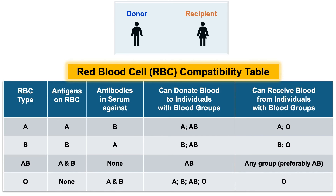The table provides a comprehensive guide to the properties and compatibility of various blood types A, B, AB, and O. For individuals with blood group A, the A antigen is present on their red blood cells, and their blood serum contains antibodies against the B antigen. As a result, individuals with blood group A can receive blood solely from individuals of groups A or O, with A being the preferred option, and can donate blood to individuals with type A or AB.